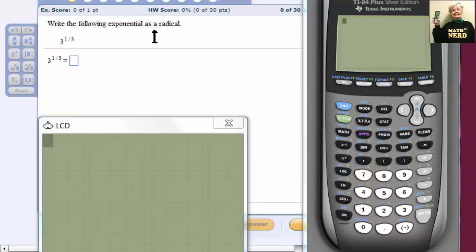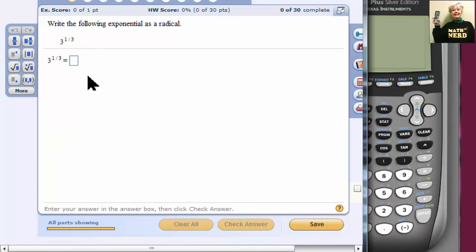Write the following exponential as a radical. Alright, remember that bases with fraction exponents are also radicals. That is, they can be expressed as radicals. So we're going to do that. I'm going to click on the answer box. The cube root is what the 1/3 power is, so I'm going to use this tool. And the denominator of the fraction exponent is the index, there you go, of the radical.